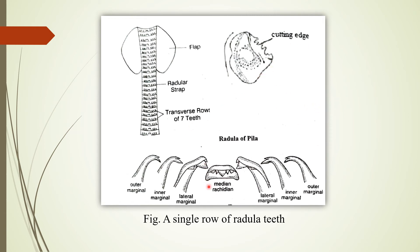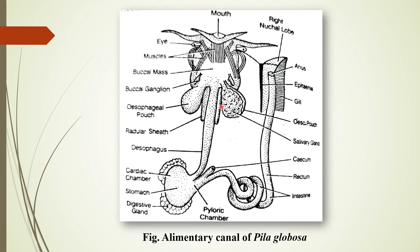The radular teeth are secreted by special odontoblast cells and continue to grow throughout the life. The buccal mass opens into a long narrow tube called the esophagus. On either side of the esophagus, a pair of esophageal pouches and a pair of salivary glands are present. The esophagus opens into the stomach. The stomach is somewhat rectangular in shape and its cavity is U-shaped in appearance.